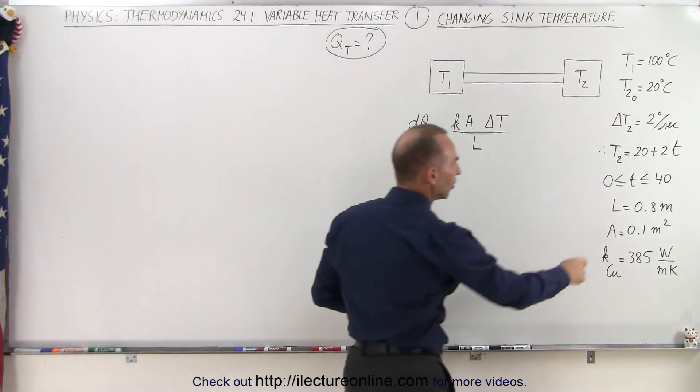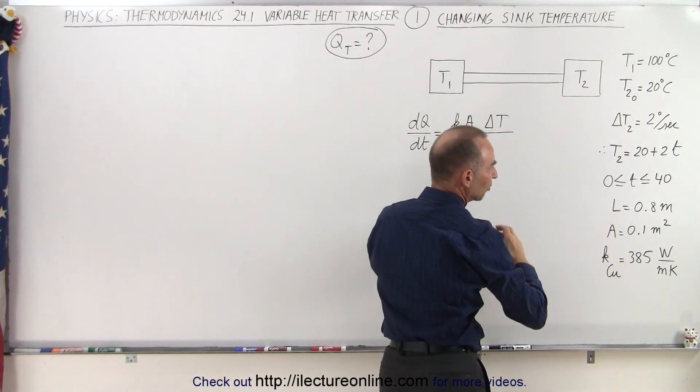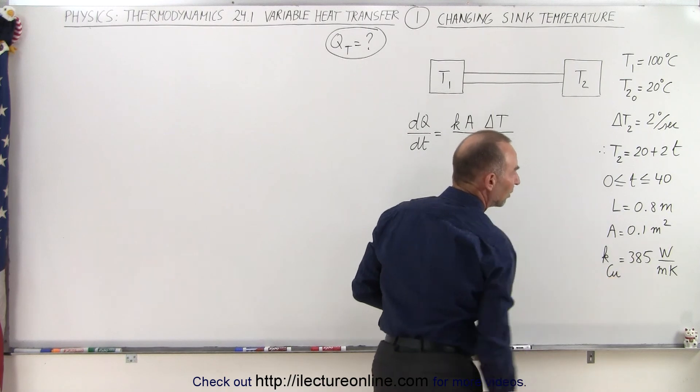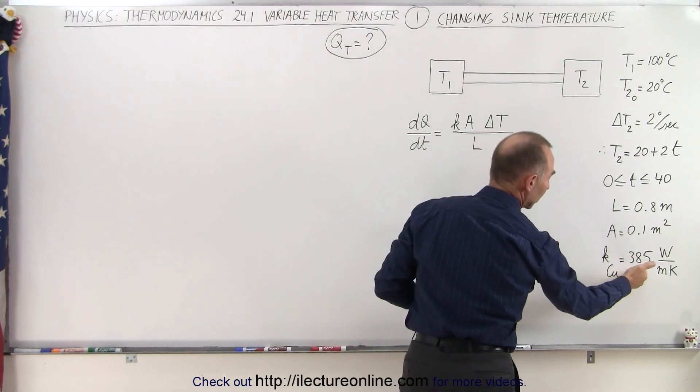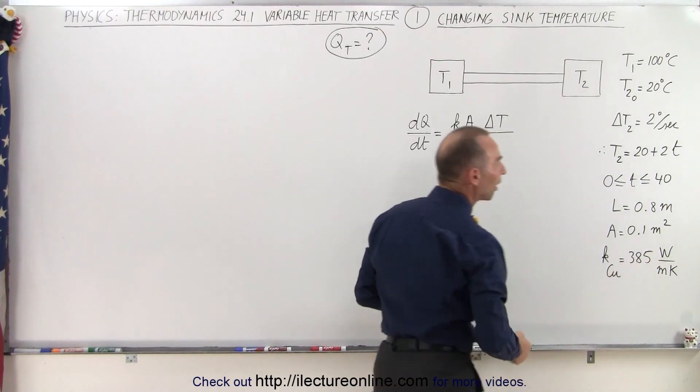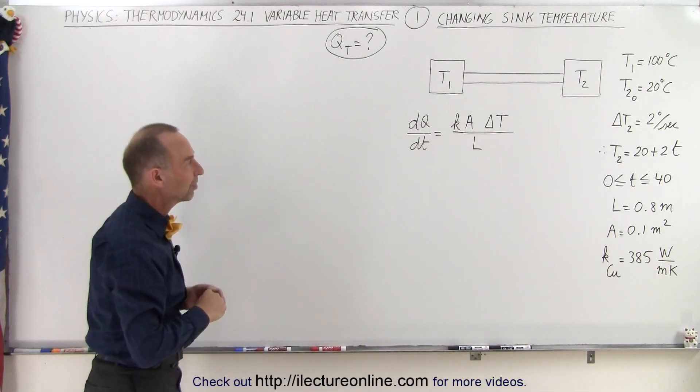Some other information: the length of the path is 0.8 meters, the cross-sectional area is 0.1 meter squared, it's made out of copper, so the heat conductivity constant is 285 watts per meter per Kelvin. Of course, Kelvin and centigrade degrees have the same size.